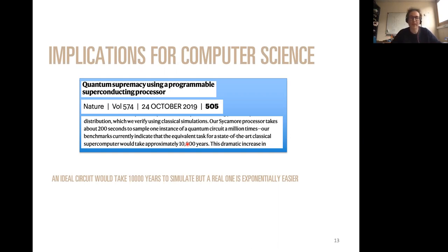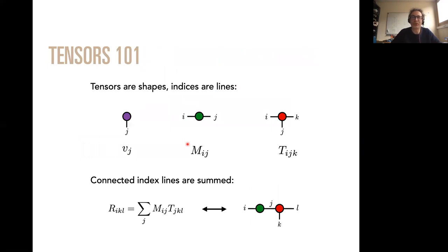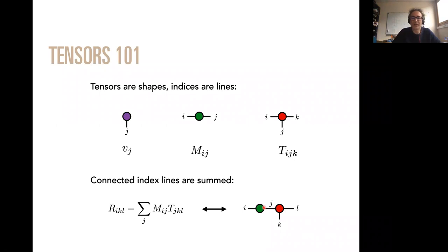Let me introduce tensor notation, because the beauty of tensors is that you stop writing equations and just make drawings. A vector is a circle with one leg, a matrix has two legs, a tensor has three legs, and so on. When I want a tensor contraction between two tensors, I just connect the lines. Every line between two tensors implies a summation over that index. That's the language I'll use for everything.